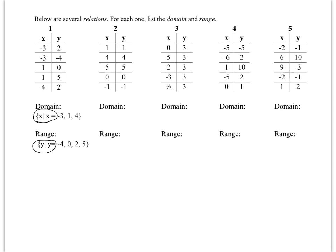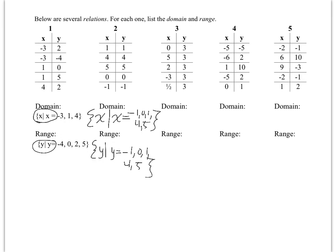For table two, I start with the curly bracket, write 'x such that x =', then write -1, 0, 1, 4, 5, and close the brackets. For the range, since range is y, we start with 'y such that y =' and write -1, 0, 1, 4, 5, then close the brackets. Now stop the video and practice writing the domain and range using such that notation for tables 3, 4, and 5.